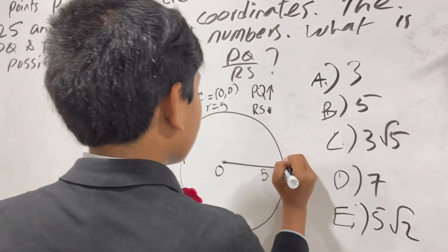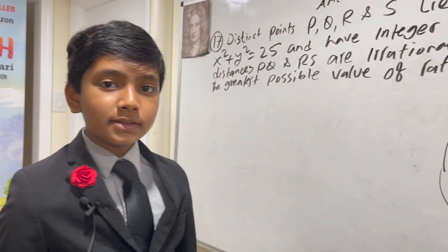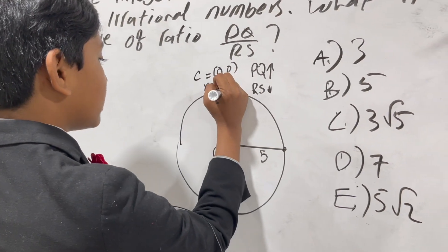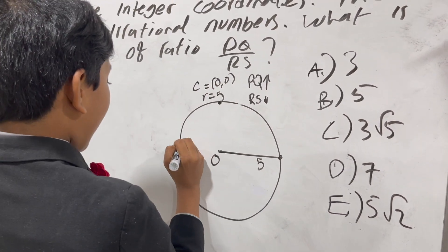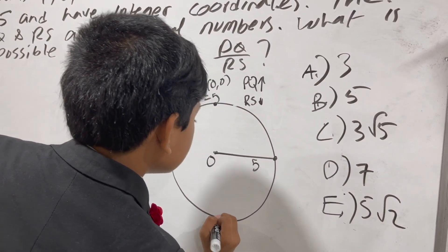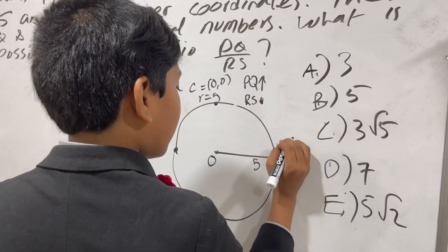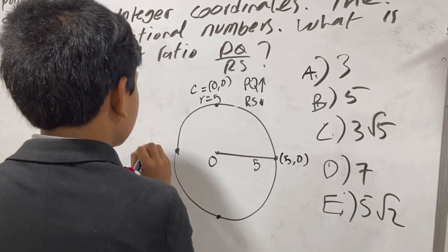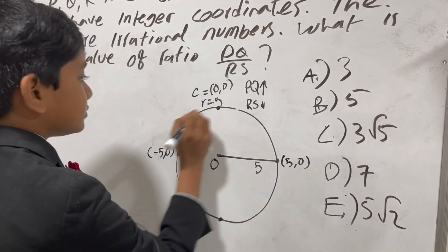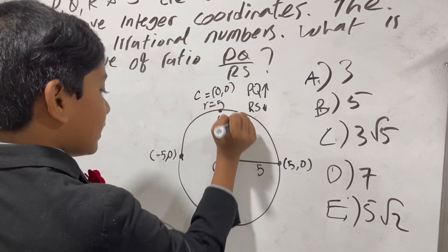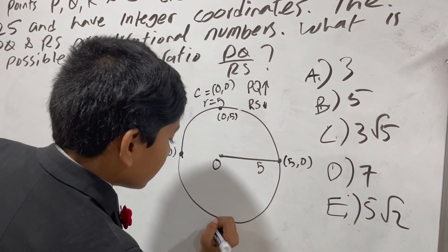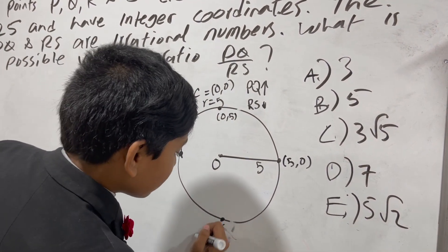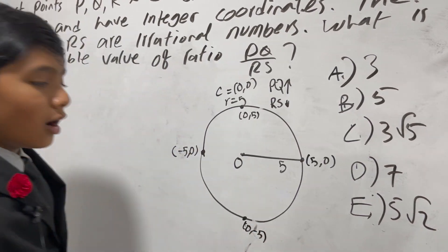So there are exactly 12 points that are equally distanced, like a clock, that have integer coordinates in this circle. First of all are the obvious ones, like for example (5,0), (-5,0), (0,5), and (0,-5).